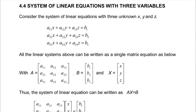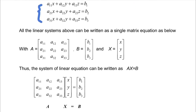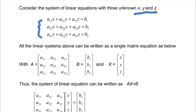Consider the system of linear equations with 3 unknowns x, y, and z. In mathematics, basically, if there are 3 unknowns, you need to have 3 equations to solve in the simultaneous equation method. We arrange all 3 equations, and all the linear systems above can be written as a single matrix equation.